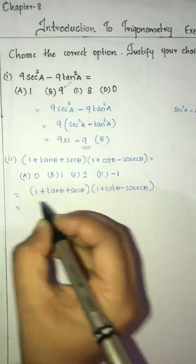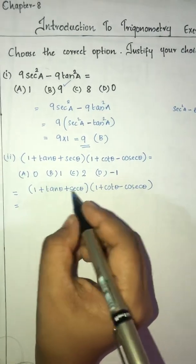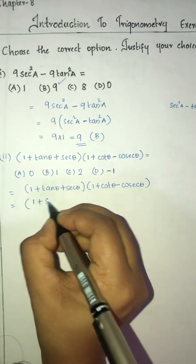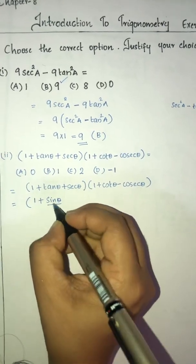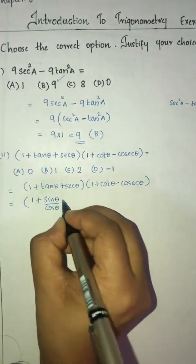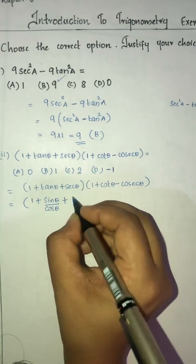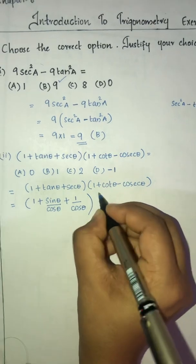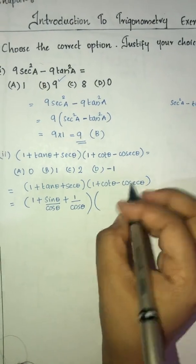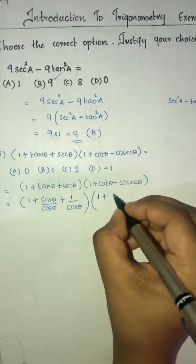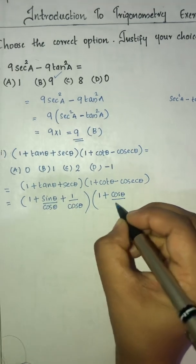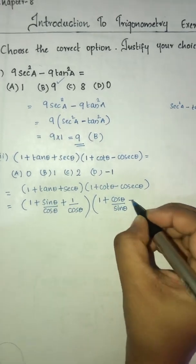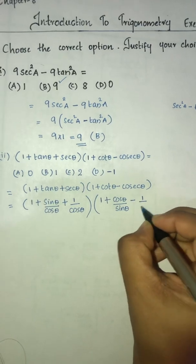Here the question is (1 + tanθ + secθ)(1 + cotθ - cosecθ). We know that tanθ = sinθ/cosθ, and cotθ = cosθ/sinθ, and secθ = 1/cosθ, and cosecθ = 1/sinθ. We will substitute these identities.